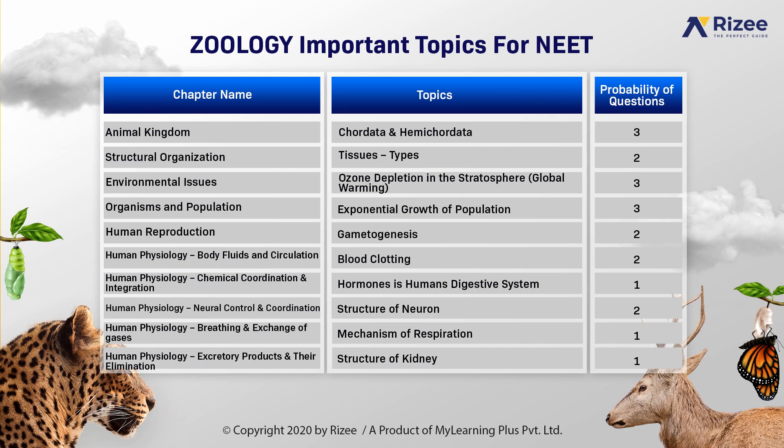In organisms and population chapter, the population topic is very very important. Probability of questions asked are 3. In human reproduction, gametogenesis is an important topic. Probability of questions are 2. In human physiology body fluids and circulation, important topics are blood and cardiac cycle. And the probability of questions are 2.